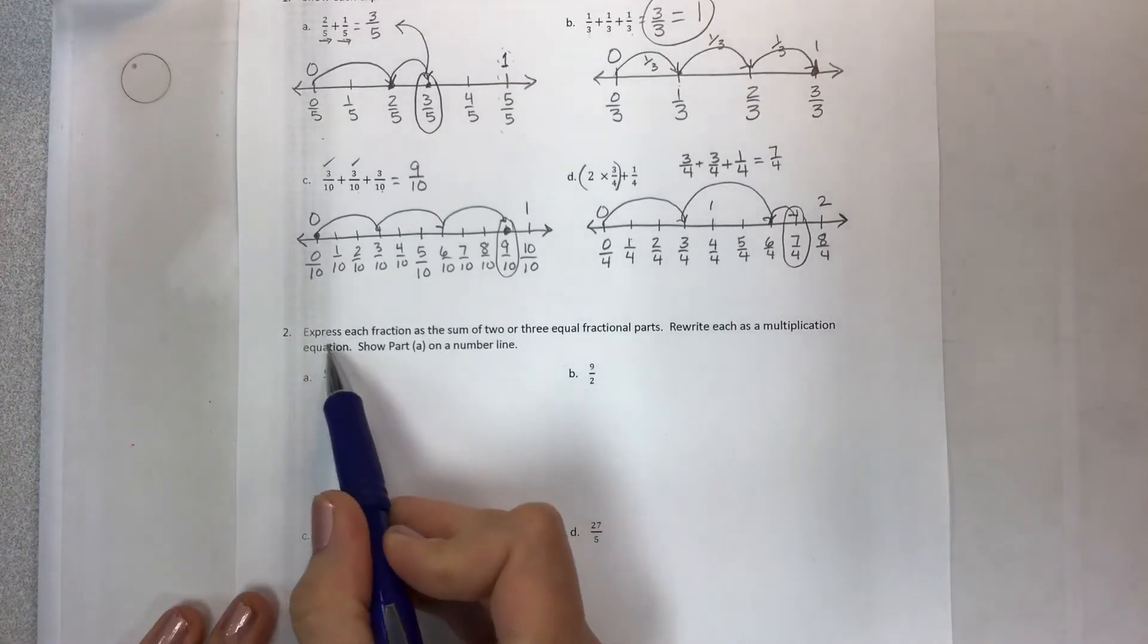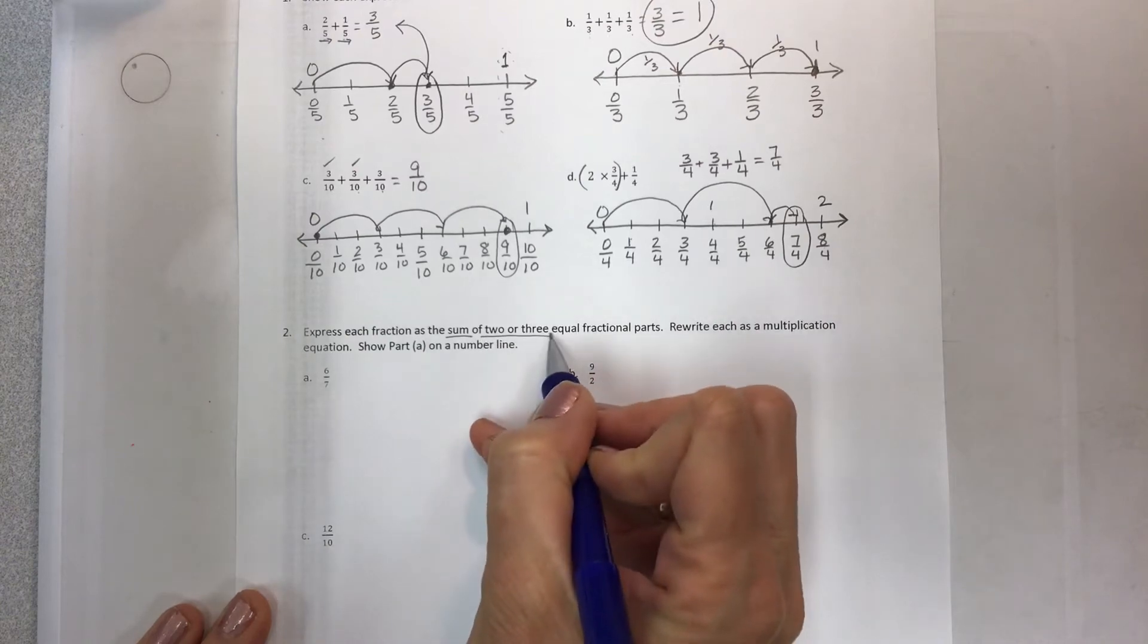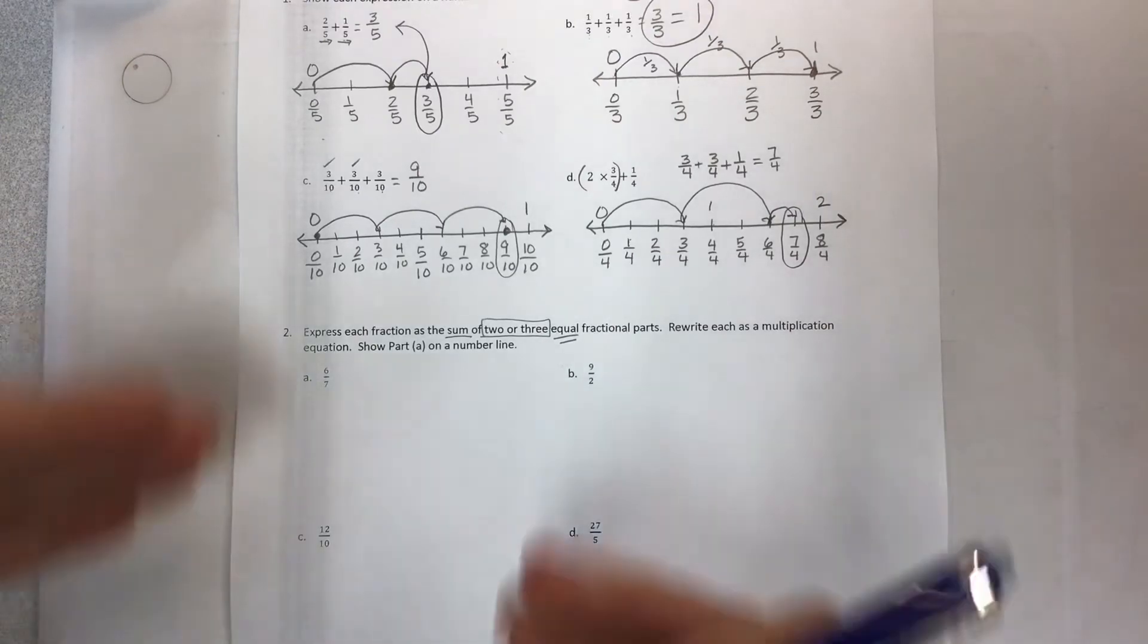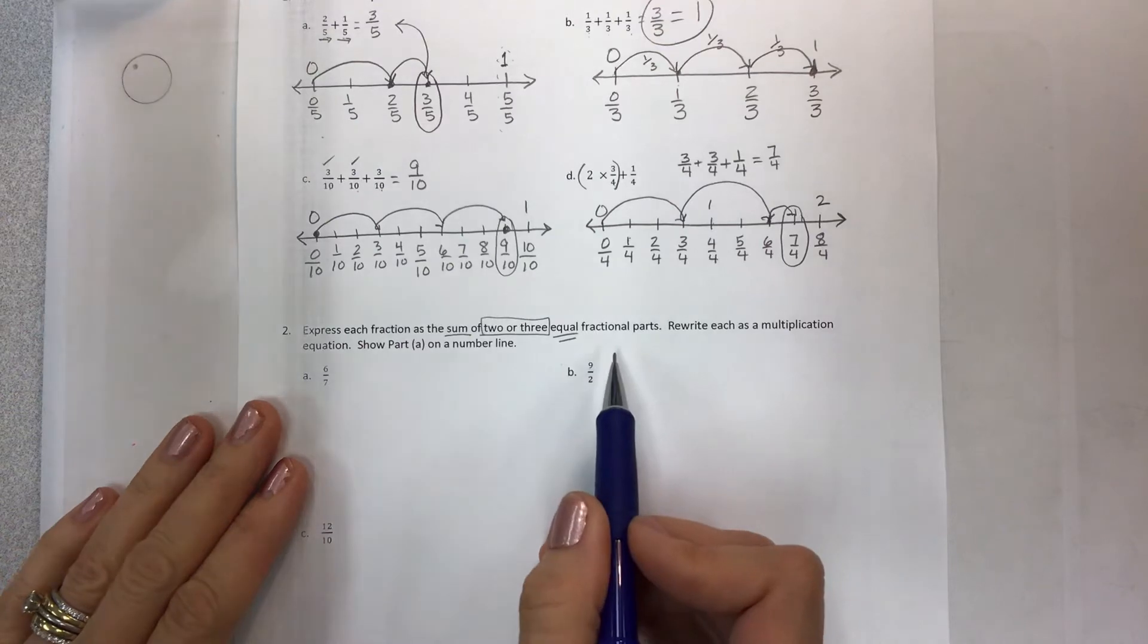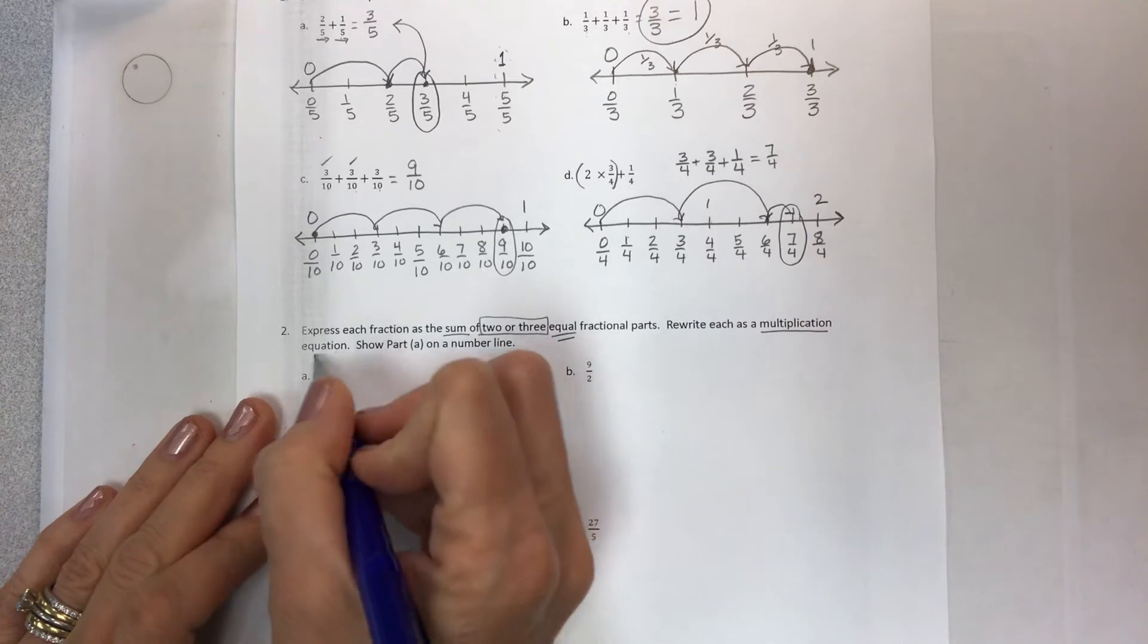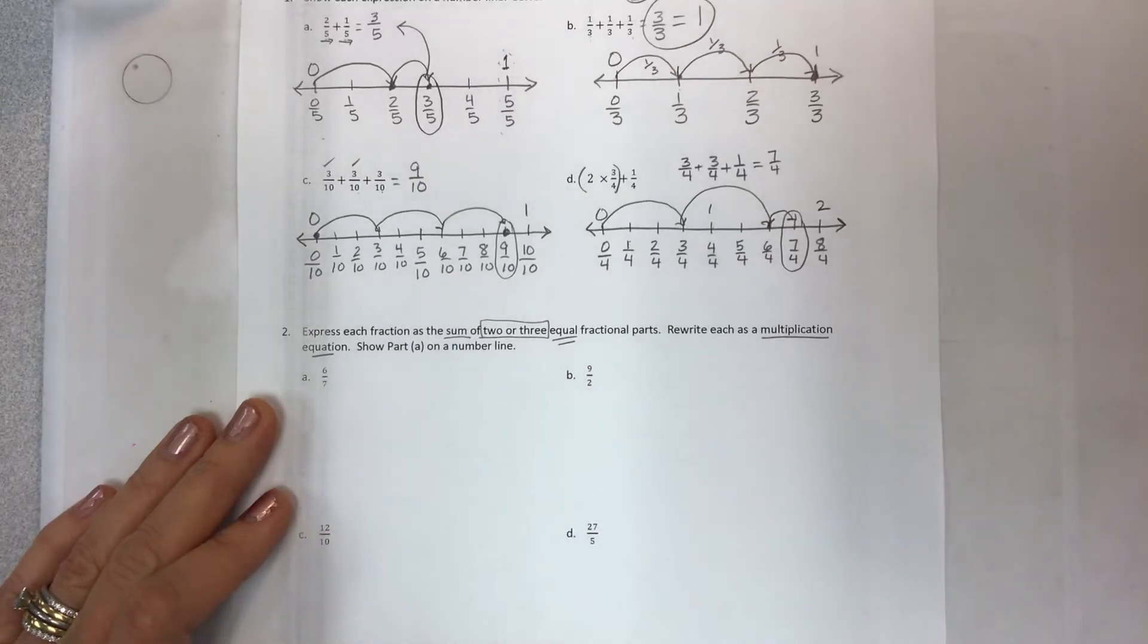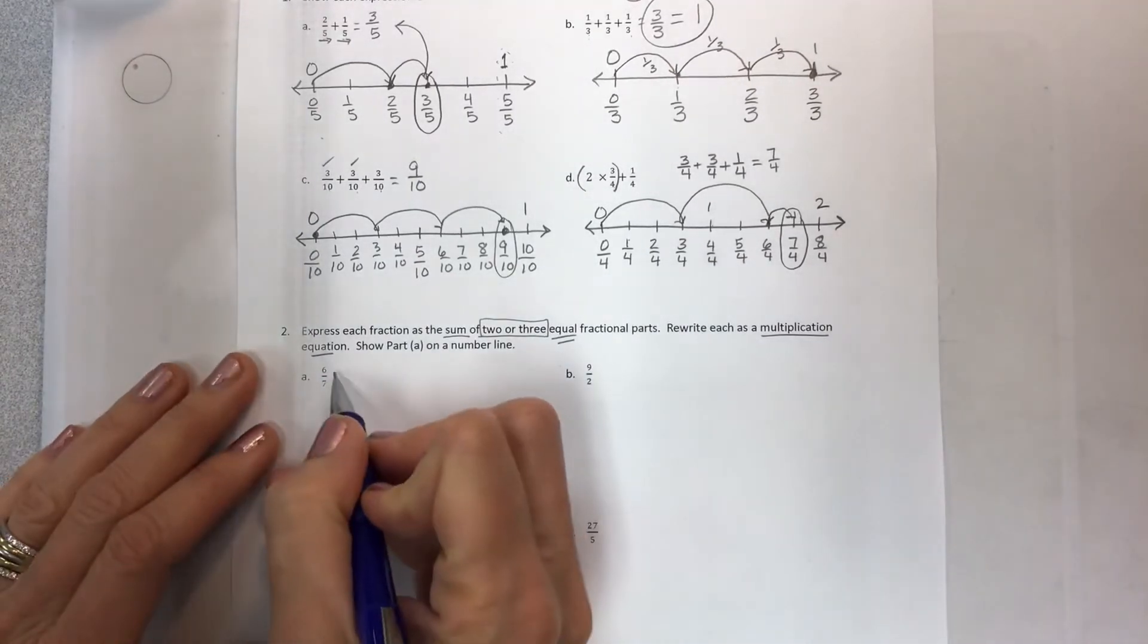Now we're going to express each fraction as the sum of two or three equal fractional parts. That's what? You know, when they give these directions, I'm telling you if I was 10, I would have no clue what all that meant. We're going to rewrite each problem as a multiplication equation. This is a multiplication equation, just FYI.